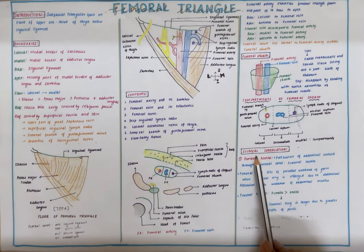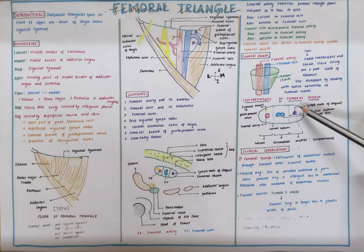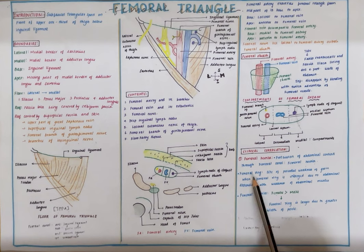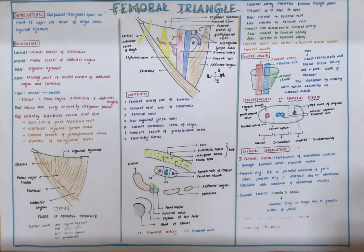Now the important clinical correlation related to the femoral triangle is femoral hernia. Femoral hernia is the protrusion of the abdominal contents through the femoral canal. So what is femoral ring? Femoral ring is the abdominal opening of the femoral canal. It is the site of potential weakness through which the abdominal contents enter.